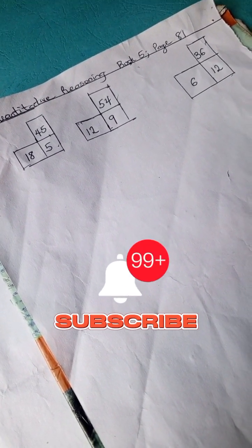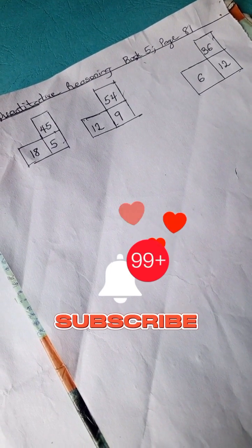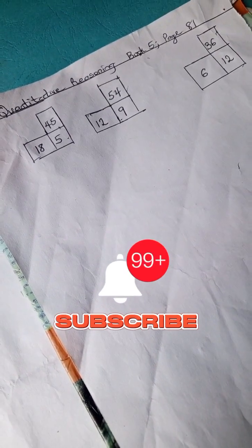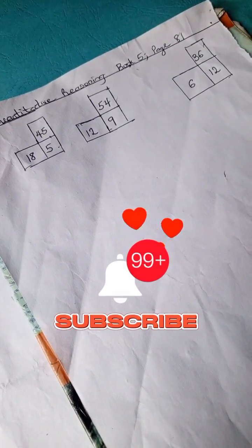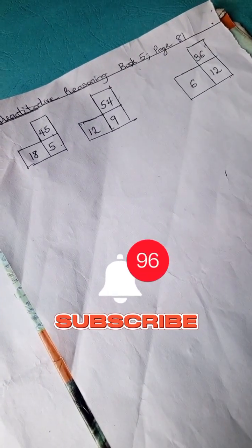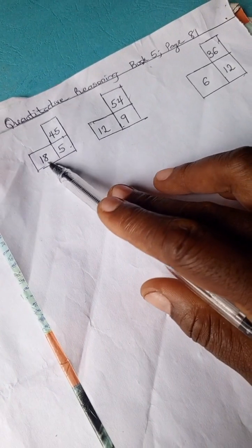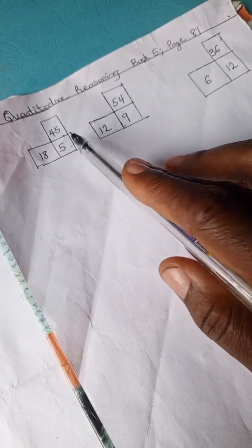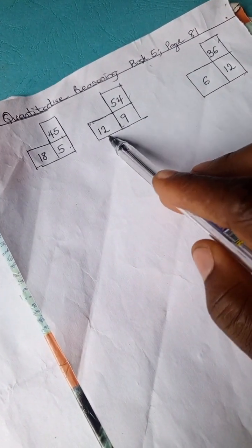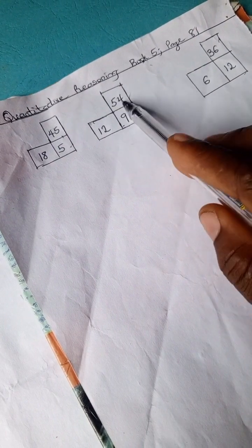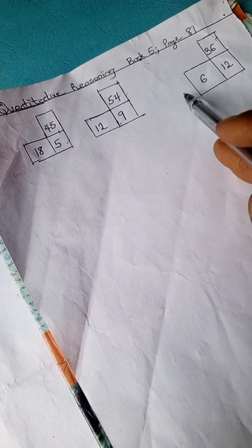If you're a new viewer, kindly subscribe to this channel as we bring you more quantitative reasoning and basic math solutions. We have this problem: 18, 45, 5 here; 12, 54, 9 here; and 6, 36, and 12.